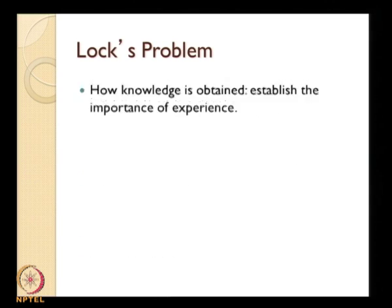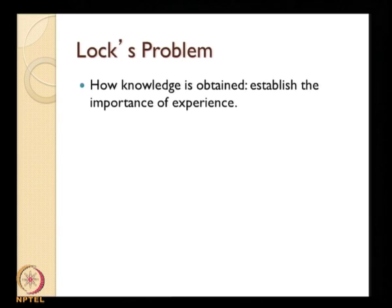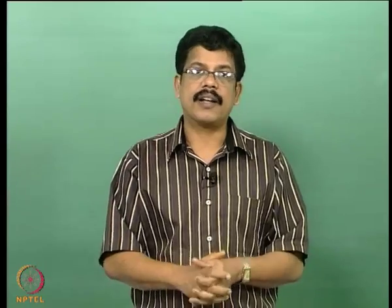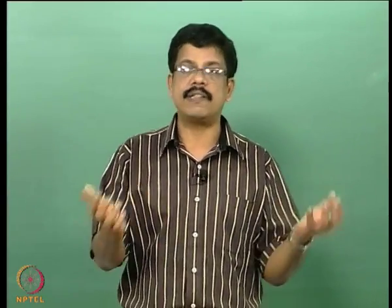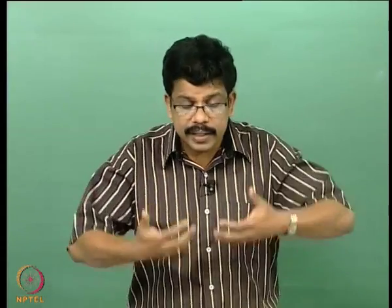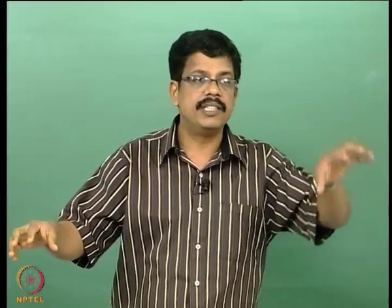How knowledge is obtained is the most important question not only for Locke but for the entire modern philosophy. Locke seeks to establish the importance of experience — the empiricist foundations — in response to the epistemological problem: what is the source of knowledge? Epistemology deals with knowledge, its kinds, varieties, sources, and limitations. At the very origin of knowledge you have two opposing traditions: rationalism and empiricism.